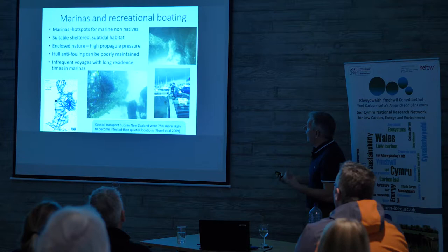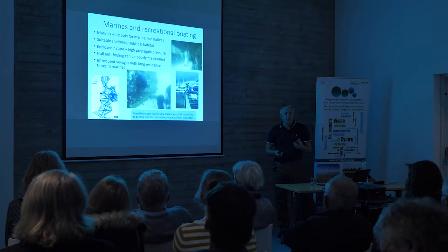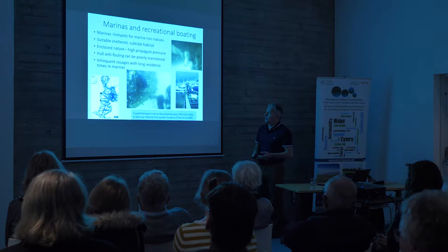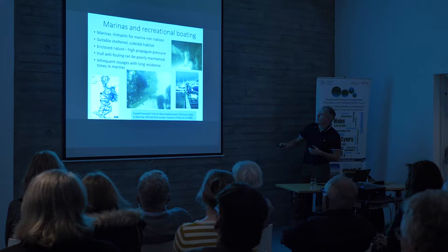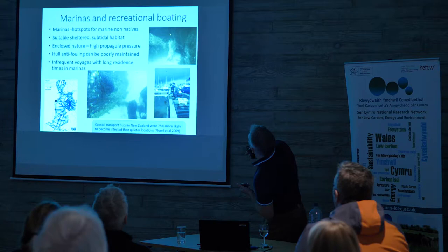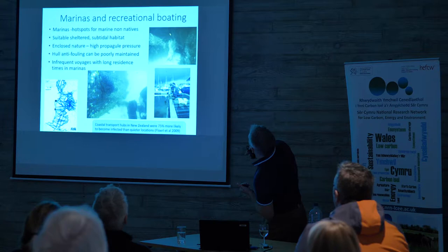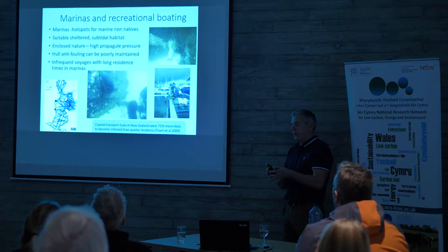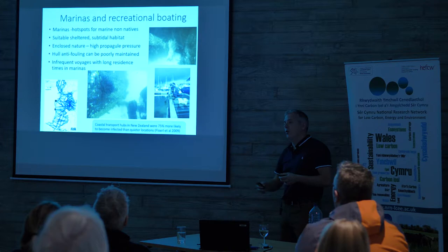Studies show that coastal transport hubs in New Zealand were far more likely to become infected than quieter locations — basically the amount of traffic, the number of boats passing through a marina, will determine the amount of non-natives. So there are lots of clues that recreational vessels, mainly yachts, with hull fouling — animals and plants growing on the hull — are an important vector.